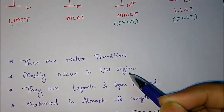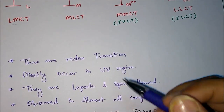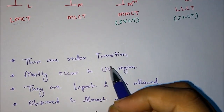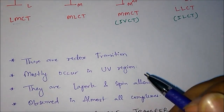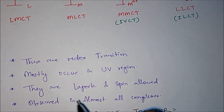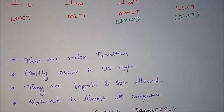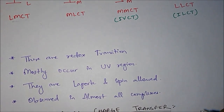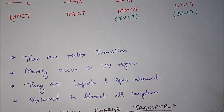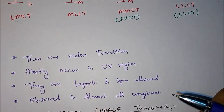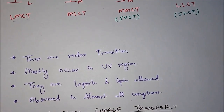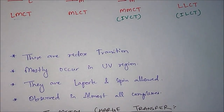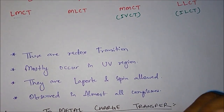The second common property is that these transitions mostly occur in the UV region. If they occur in the visible region, then the metal complex will show intense color. The third common property is that they are all Laporte allowed and spin allowed. This is very important because questions can be asked about which property is not true about LMCT, MMCT, or MLCT. The fourth property is that charge transfer transitions are observed in almost all complexes.